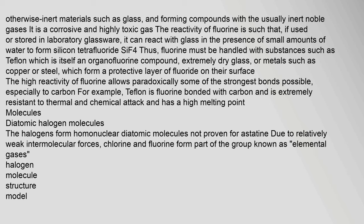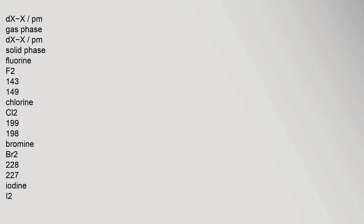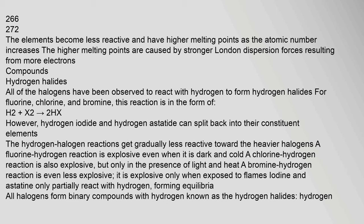Molecules — Diatomic halogen molecules: The halogens form homonuclear diatomic molecules (not proven for astatine) due to relatively weak intermolecular forces. Chlorine and fluorine form part of the group known as elemental gases. The bond lengths (D x-x in pm) in the gas phase are: F2 — 143 pm, Cl2 — 199 pm, Br2 — 228 pm, I2 — 266 pm. The elements become less reactive and have higher melting points as the atomic number increases. The higher melting points are caused by stronger London dispersion forces resulting from more electrons.